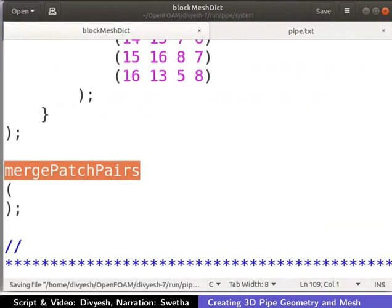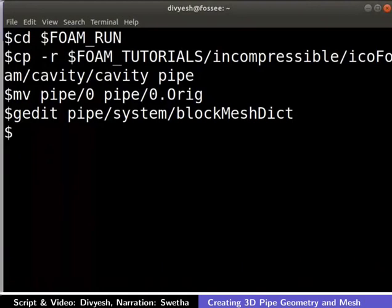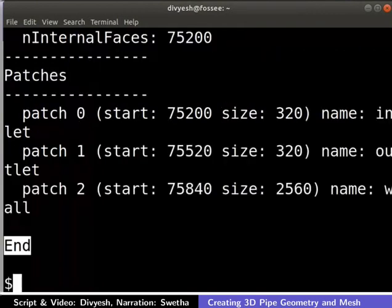Now, save the blockMeshDict file and close the text editor. Now go to the terminal and navigate to the pipe directory. Type blockMesh command and press enter. The meshing is now complete.